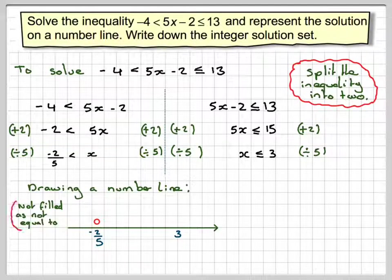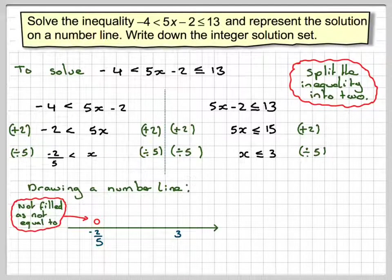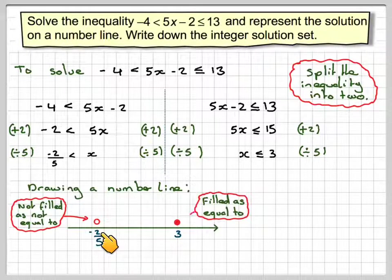Note, not filled in as not equal to. And here we put a filled circle at 3 because it is actually equal, allowed to be equal to 3. That's how we distinguish not equal to and equal to.